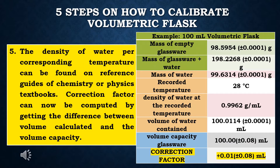Step 5: the density of water at a corresponding temperature can be found on reference guides in chemistry or physics textbooks. The correction factor can now be computed by getting the difference between the volume calculated and the volume capacity. In the example, the volume capacity of the glassware as found on the label is 100.00 ml. Correction factor equals 100.0114 ml minus 100.00 ml, giving a computed correction factor of +0.01 ±0.08 ml, rounded to the correct uncertainty in significant figures.